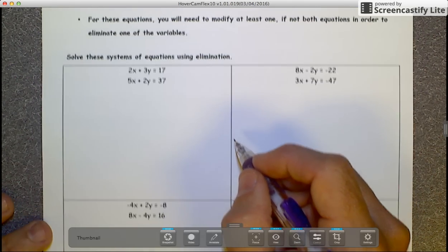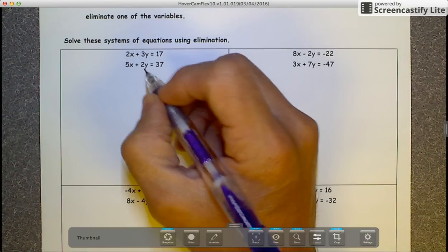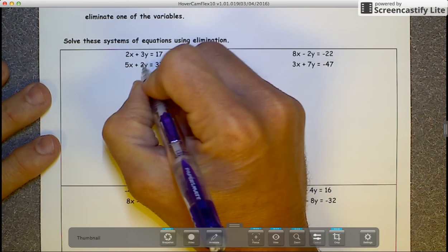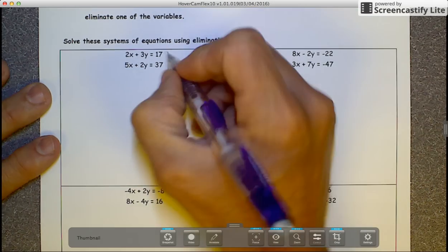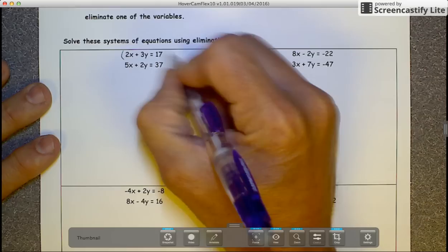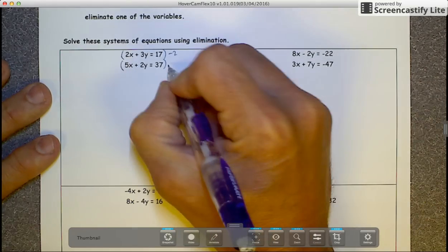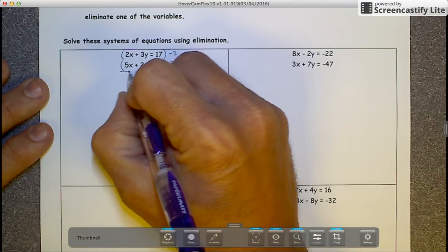We're going to do four examples. The first example: I have a 2x and a 5x, a positive 3y and a positive 2y. 17 and 37 don't really matter. I'm going to eliminate the y's because it seems easier. So the first equation I'm going to multiply by negative 2, the second equation by positive 3. Remember, they have to be opposites.